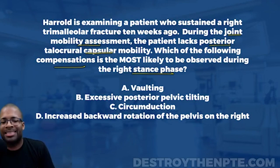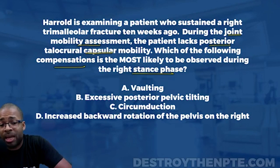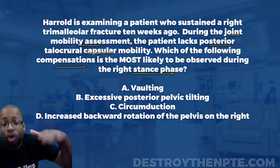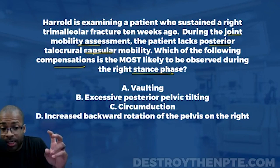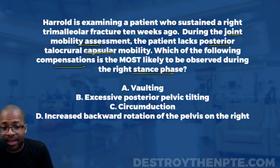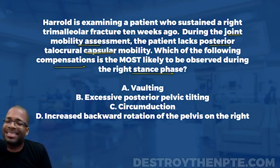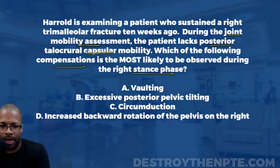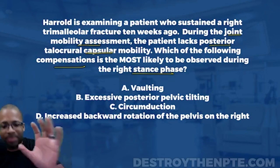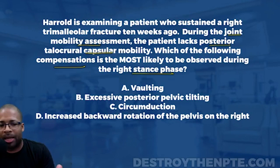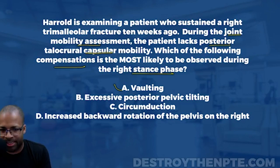For example, if there's a longer limb on the left side, one compensation is to plantar flex on the right side — aka vaulting — in order to clear that longer limb. But does the question say anything about one leg being longer than the other? It does not mention any leg length discrepancy, so I don't like vaulting as the answer. Putting an X next to A.